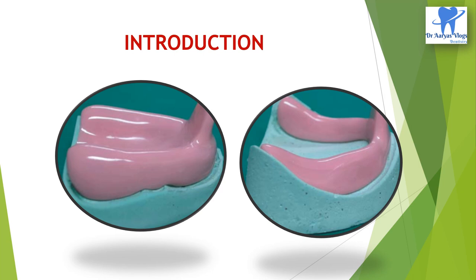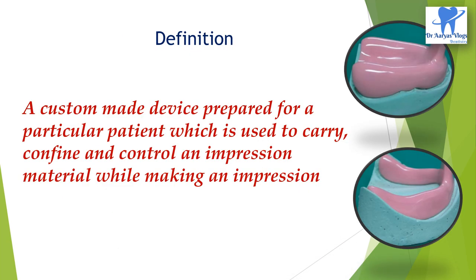Coming to the introduction. These are the trays which are used to overcome the inaccuracies associated with the primary impressions, and they are custom made to fit the denture bearing area on the primary model. Like stock trays, they are used to support and transport the impression material to the mouth and then to the laboratory. The design of the custom tray will depend on the amount of undercut present and the type of impression material used.